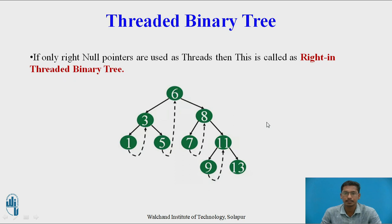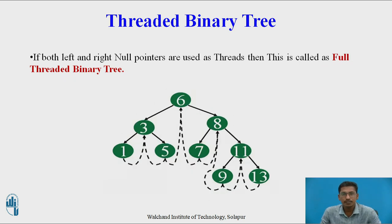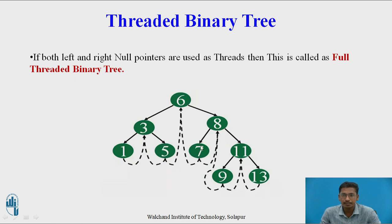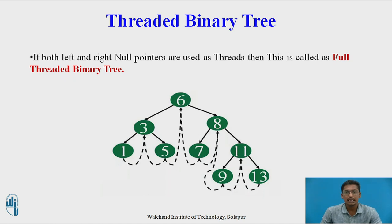If both left and right null pointers are used as threads, this tree is called a full threaded binary tree. Left null pointers are replaced with in-order predecessors and right null pointers are replaced with in-order successors. For example, for node 7: the in-order predecessor of 7 is 6, so the left child of 7 contains the address of 6; the in-order successor of 7 is 8, so the right child of 7 contains the address of 8. The tree formed by this is called a full threaded binary tree.